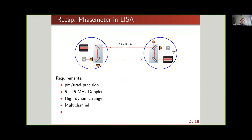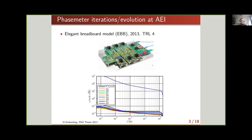We also have many photo receivers, including quadrant photo receivers, all over the constellation, so we need a multi-channel phase meter — many channels, which might sound trivial but it's not.